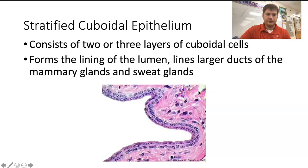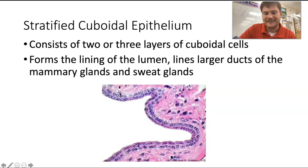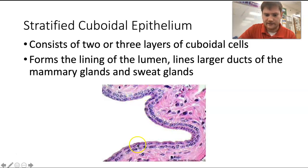Stratified cuboidal epithelium — stratified meaning multiple layers, cuboidal meaning shaped like cubes. This has two or three layers of cuboidal cells lining different types of ducts, like sweat glands, mammary glands, ear wax glands, and your lumen. All the lighter pink stuff in the background is connective tissue. We're just looking at the lining of the epithelium.